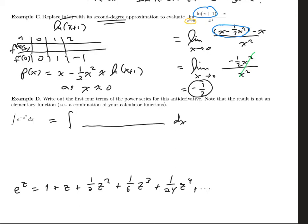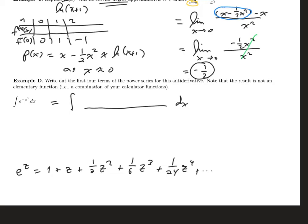That's the polynomial, the infinite polynomial that represents e to the z. So each of those fractions is just one over k factorial, where the coefficient is on the z to the k term. And then I can just substitute negative x squared for z, just like I did in the problem with arc tangent.